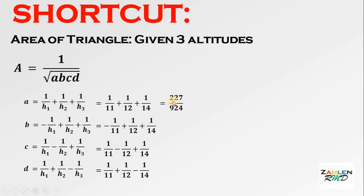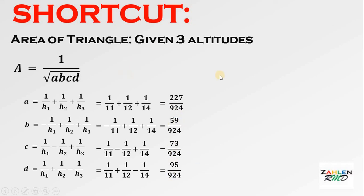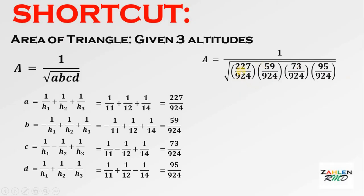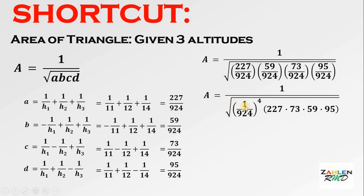Simplifying these results: A = 227/924, B = 59/924, C = 73/924, and D = 95/924. These numbers are familiar because we already used them in the previous solution. Substituting into the formula, we get 1 over the square root of (227/924) × (59/924) × (73/924) × (95/924). Simplifying, this becomes 1 over the square root of (924⁴ in denominator) times 227 × 73 × 59 × 95.